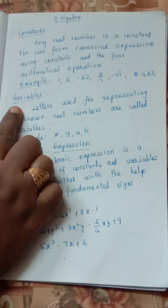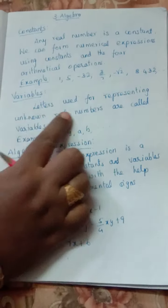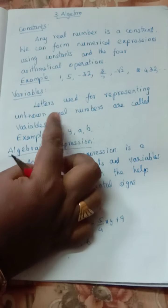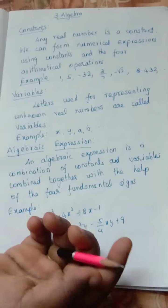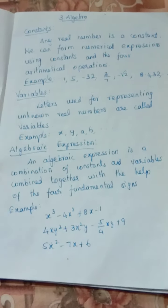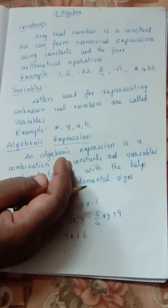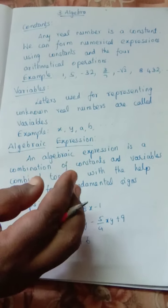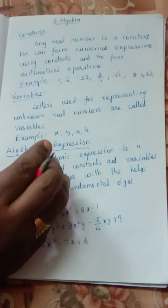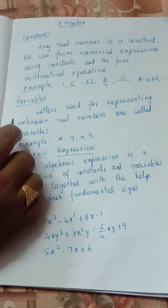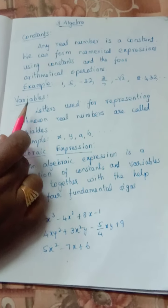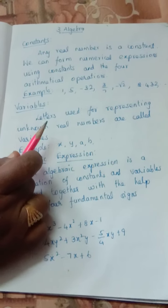Next, variables. What is a variable? Letters used for representing unknown real numbers are called variables. For example, if you have 10 rupees and you spend 2 rupees, the remaining amount — if we consider it as x — what we are going to find, we consider it as a variable. From the word 'variable' we can understand the meaning: the value will be changed.